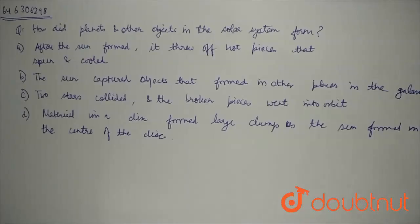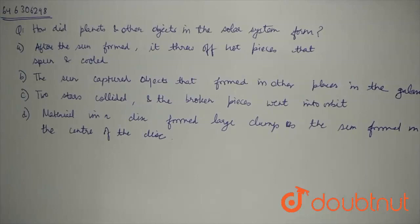The question is: how did planets and other objects in the solar system form? Before reading the options, I want to give you some overview of how the solar system came to be.